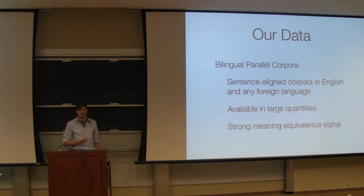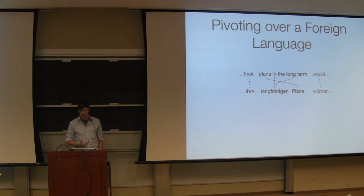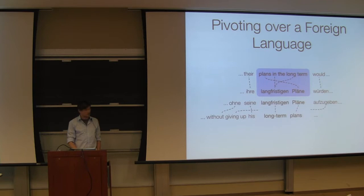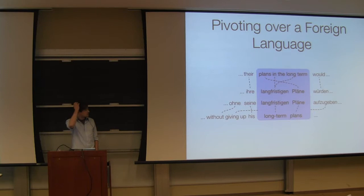We use bilingual parallel corpora. They're available in large quantities and quite easily, and the signal is fairly strong. You will basically know that everything has a correspondence. The way we extract paraphrases from this data is using the pivoting approach. If you have a phrase like plans in the long term in English that translates to German, and you see the German somewhere else translating to long term plans, you make the assumption that these two English phrases are paraphrases with one another. That works fairly well.